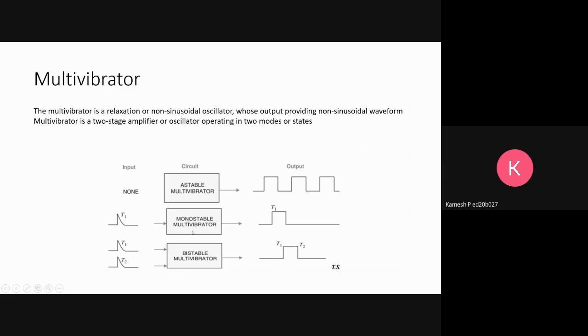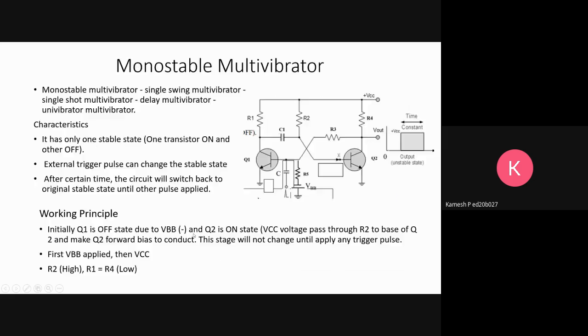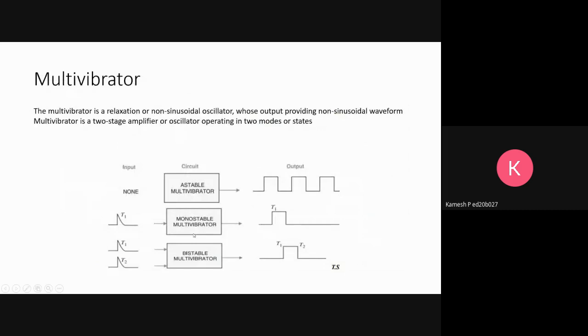Astable multivibrator, monostable, and bistable. The astable multivibrator, without any trigger pulse or input, gives a sinusoidal output which keeps changing its state from one to another.